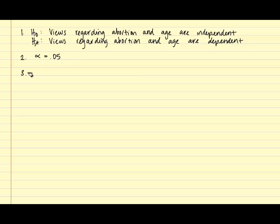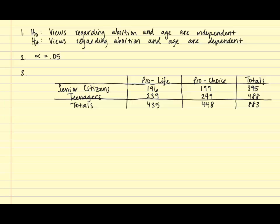In the third step, we're going to compute the test statistic. In order to compute the test statistic, we're first going to identify the observed counts. The observed counts, which can be referred to as the original data collected, can be seen in the contingency table for this example. Our contingency table shows the actual observed counts for senior citizens and teenagers regarding whether they're pro-life or pro-choice. The values of 196, 239, 199, and 249 will be considered our observed counts.